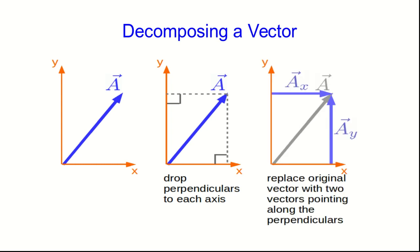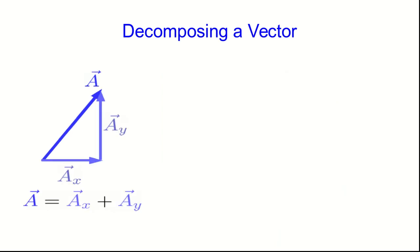Replace those with two vectors that we're giving very particular names. If the vector is a, these are the vectors ax and ay. And now just rearranging them you can see that a is the vector sum of ax and ay.